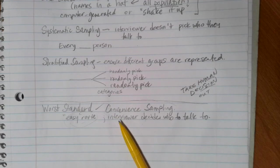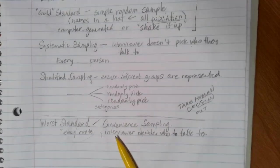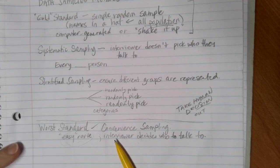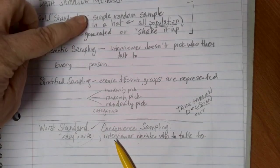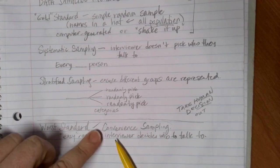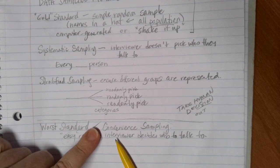So for some of your homework assignments, it's going to be asking you to choose what sampling method is being described. And these are going to be the ones that you're going to want to choose between: your simple random sample, systematic sampling, stratified sampling, or if it just represents a convenience sampling situation.